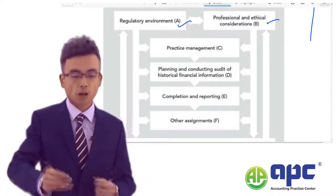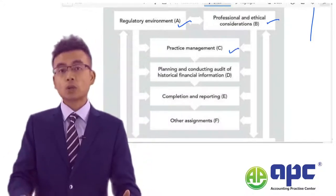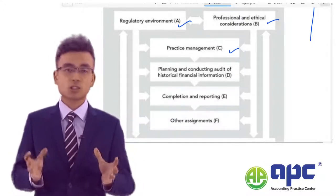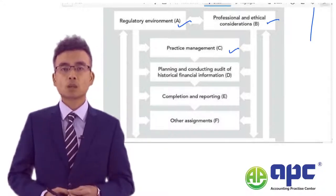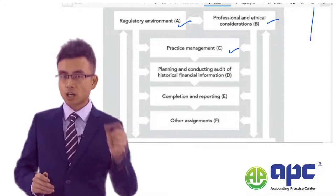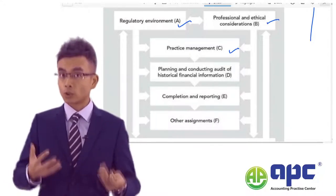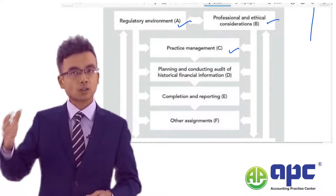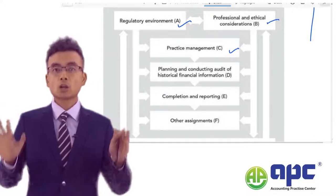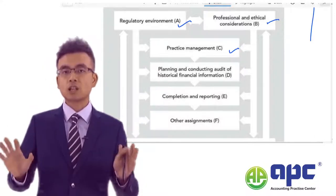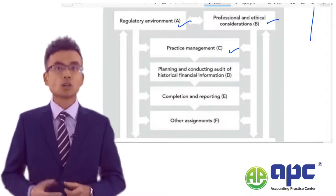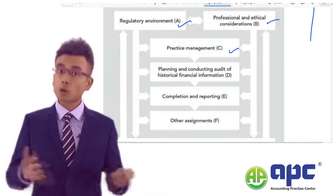Moving on to Part C, it's the practice management. This covers topics such as setting up your own audit firm, how you're going to advertise it, and other quality control issues to consider. Quality control relates to when you sign a contract with a client, plan your audit, do your audit, review your audit, and provide your audit report. Across all these stages, you must maintain a sufficient level of quality to minimise the risk of issuing a wrong audit opinion.